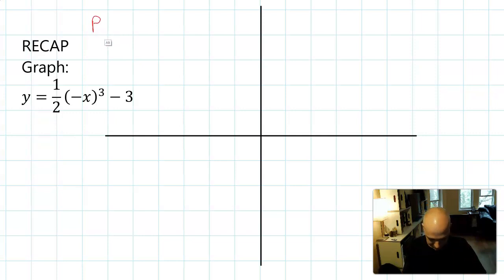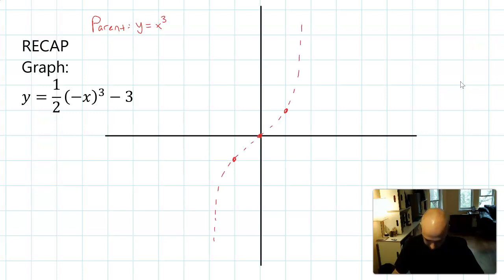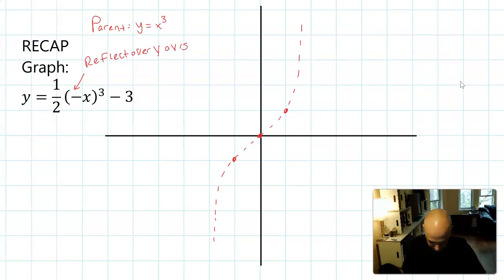If we're doing this, the first thing to observe is the parent graph is Y equals X cubed. I would plot some points from that parent graph. Then I'll look at what the transformations are. The negative here means we reflect over the Y axis, and this one half means we divide all Y values by two.